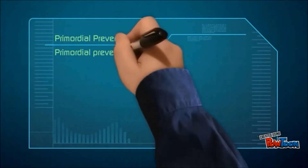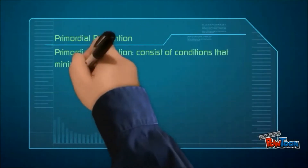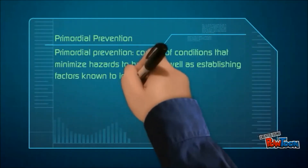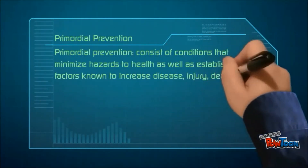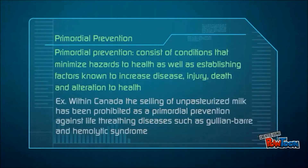Primordial prevention consists of conditions that minimize hazards to health, as well as establishing factors known to increase disease, injury, death, and alteration. Within Canada, the selling of unpasteurized milk has been prohibited as a primordial prevention against life-threatening diseases such as Guillain-Barré and hemolytic syndrome.